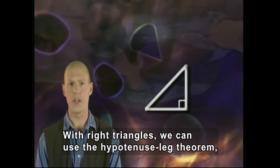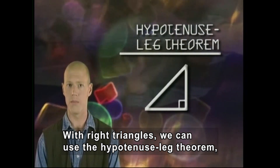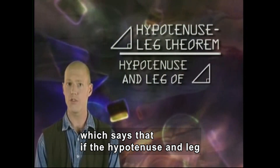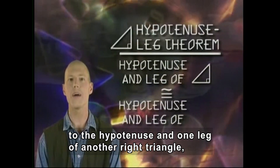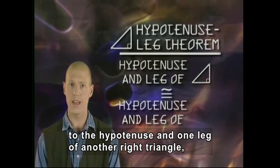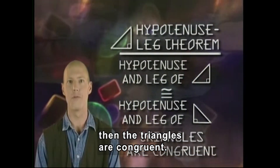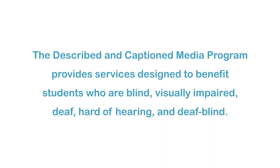With right triangles, we can use the hypotenuse-leg theorem, which says that if the hypotenuse and leg of one right triangle are congruent to the hypotenuse and one leg of another right triangle, then the triangles are congruent.